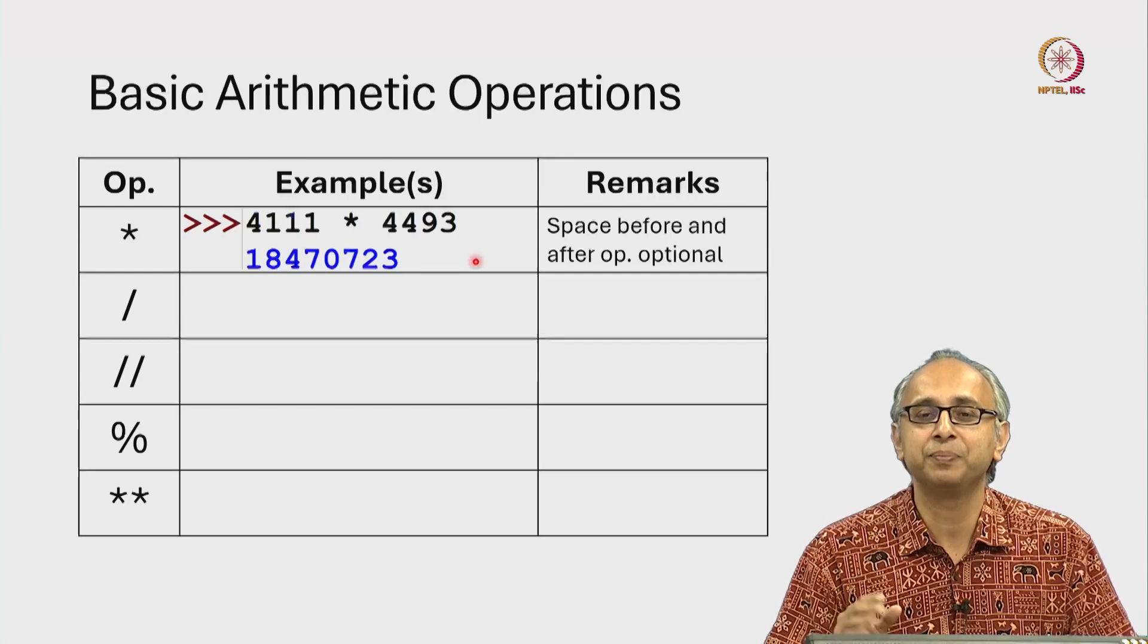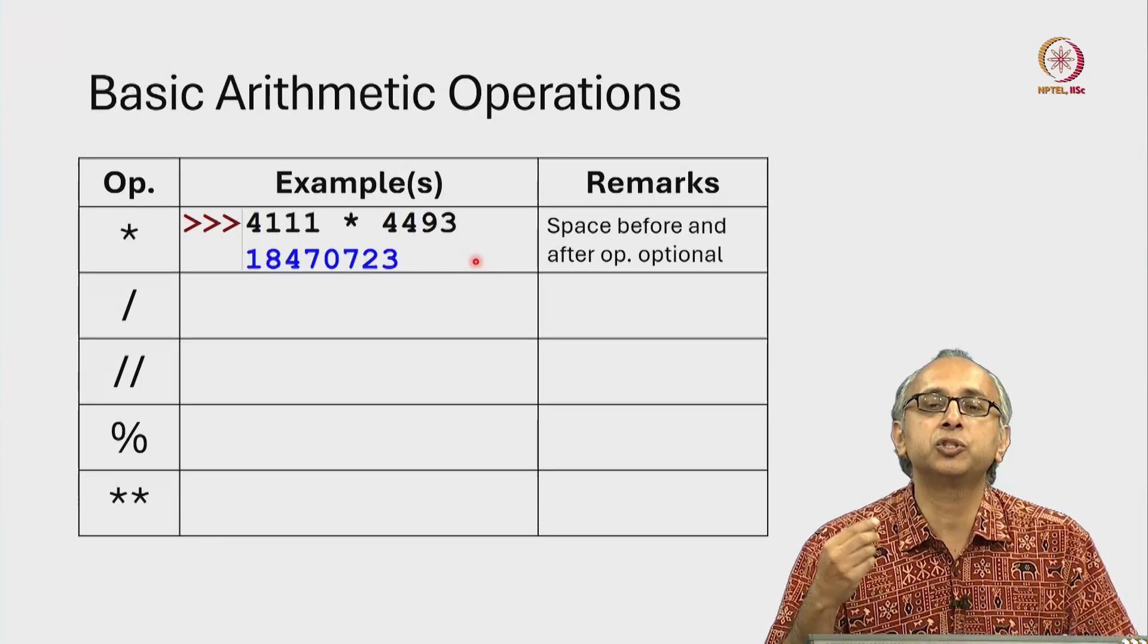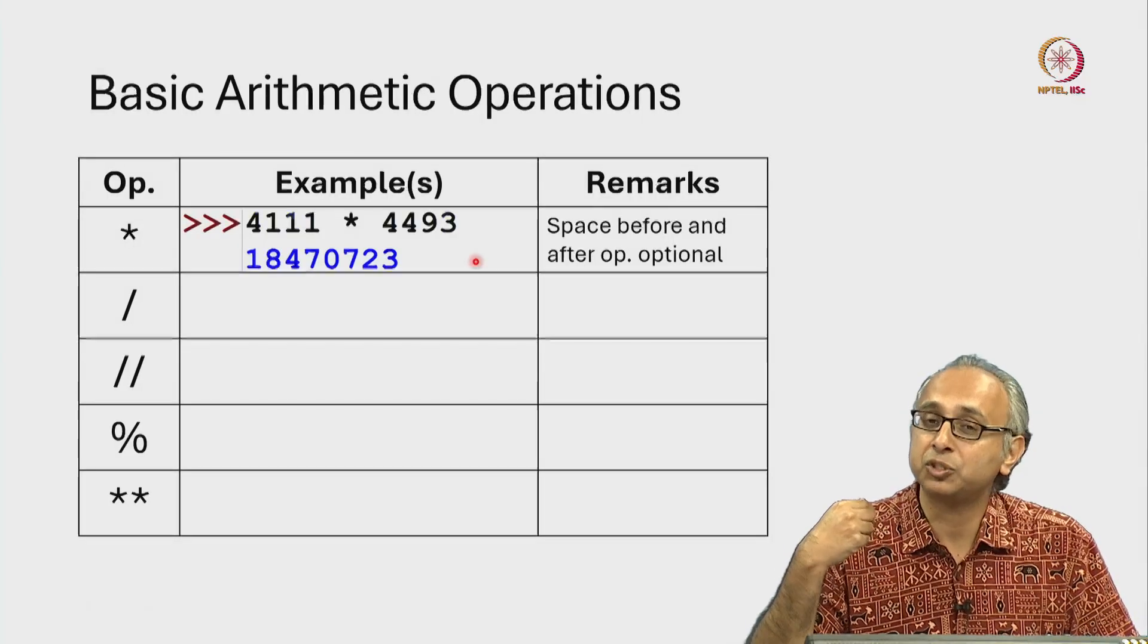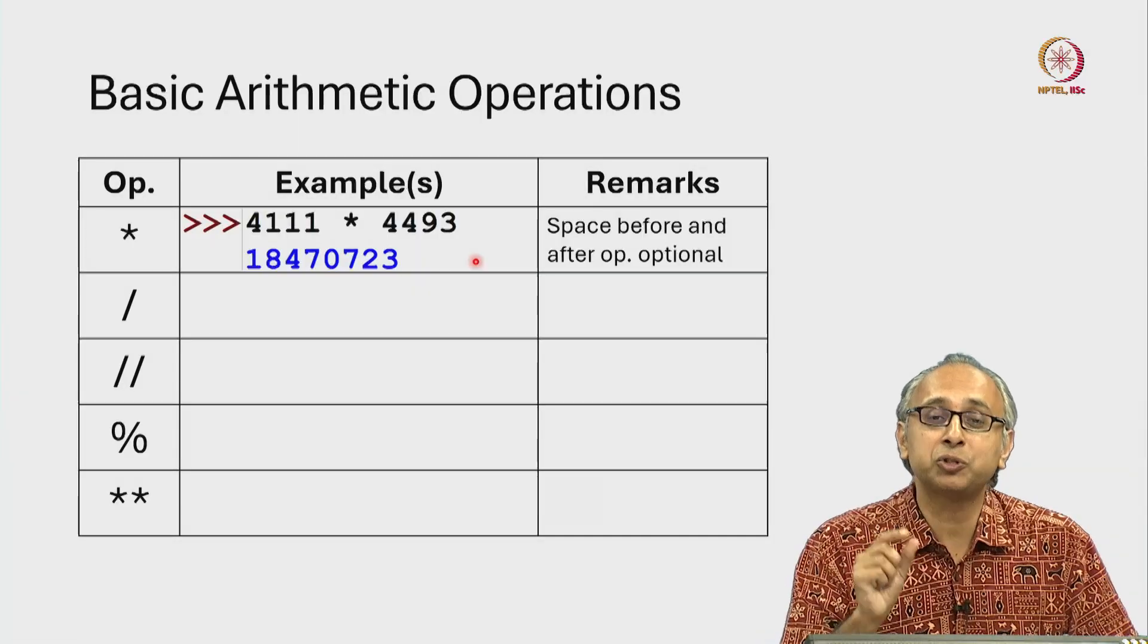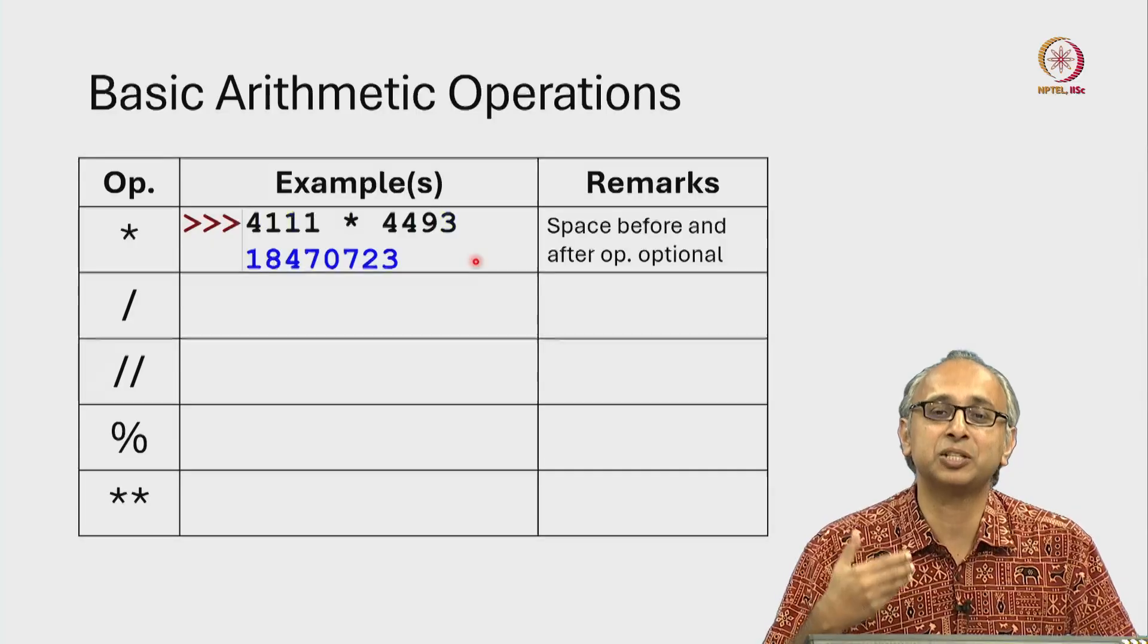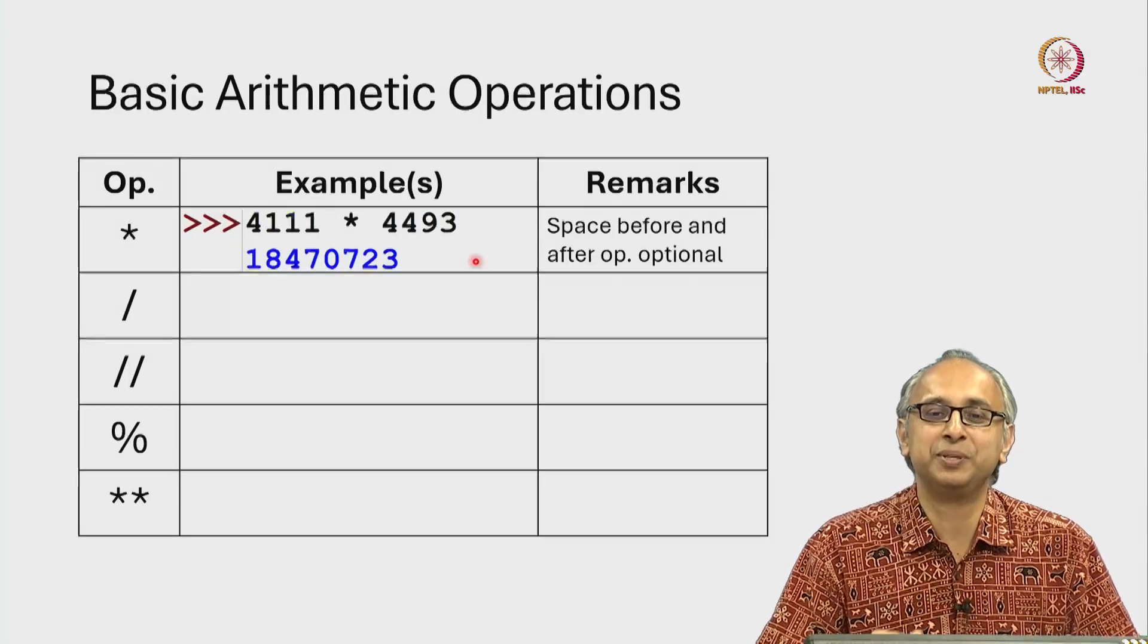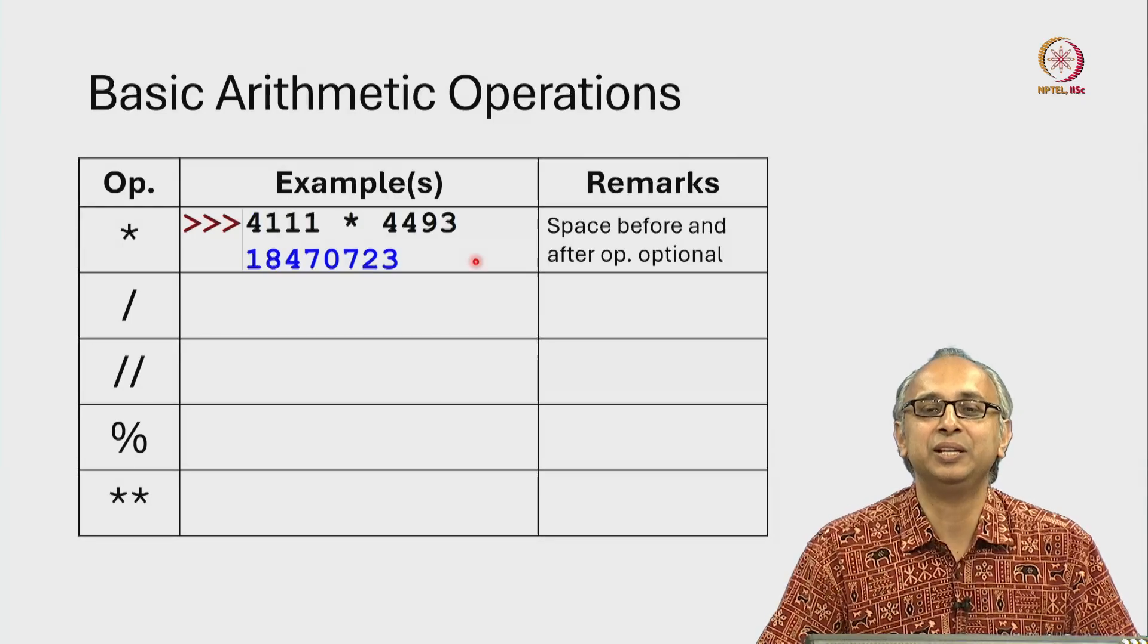They are not necessary but they do make your code a little bit easier to read. Now because lots of people write code that way, you will often find that AI generated code such as the code produced by ChatGPT or Github Copilot will also put spaces on either side of operators. Again this is because those generative AI systems have been trained on large amounts of human written code and humans tend to follow this good practice of writing clean, easy to read code.